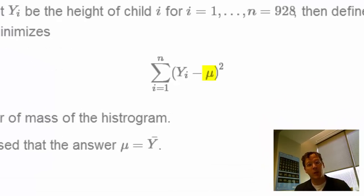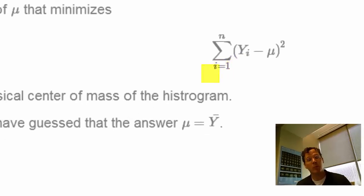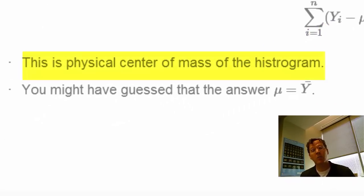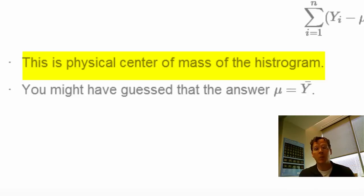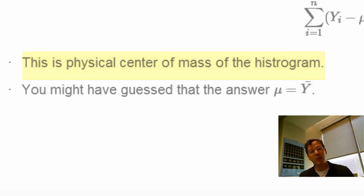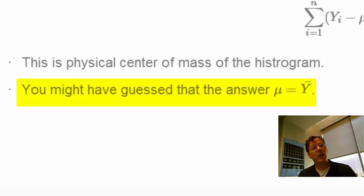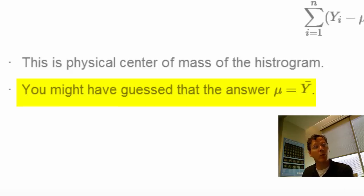The middle will be the value of mu that minimizes the sum of the squared distances between the observed data y_i and this value mu — that's how we define the middle. It's also related to physics: the so-called physical center of mass. If you thought of those histogram bars as physical entities having weight and tried to figure out where you would put your finger to balance it, that would be the center of mass. You might have guessed the answer has to be the mean, and that does turn out to be correct — we'll even go through the proof.